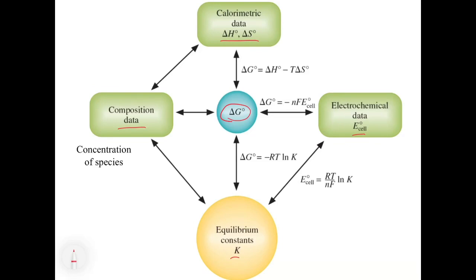So we have, if we want to go from delta G to the electrochemical data, we have our delta G is equal to minus nF E cell. If we want to go from delta G to the equilibrium constant, we have minus RT ln K.